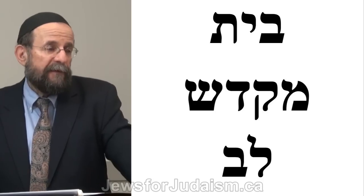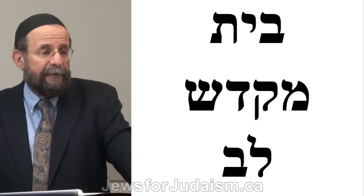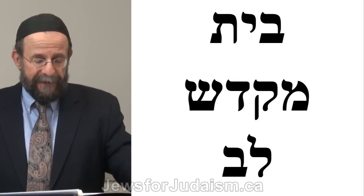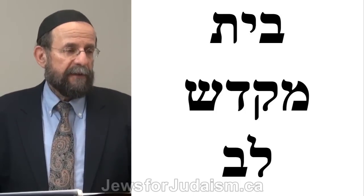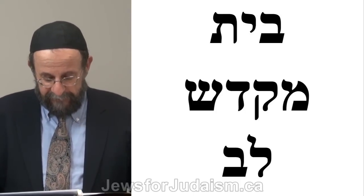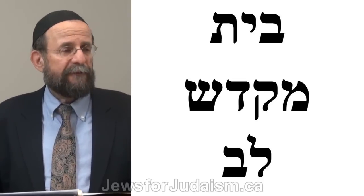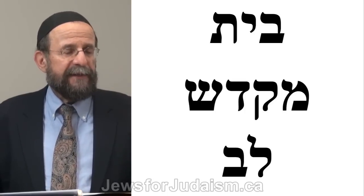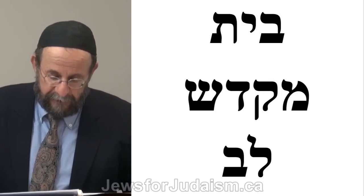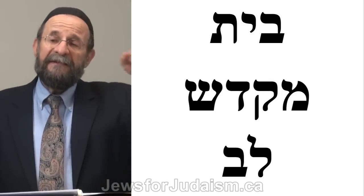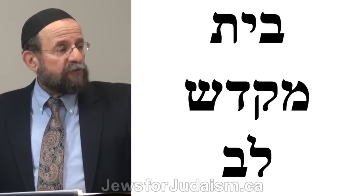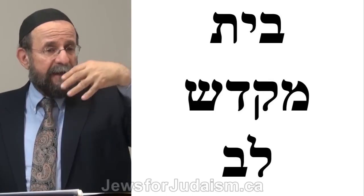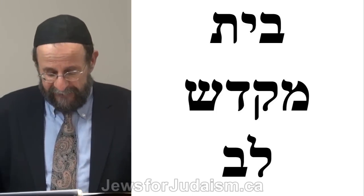Bait is the second letter — it can also be read as Bayit, a house. But we have another kind of structure: the word Mikdash, a sanctuary. In the Torah, Exodus chapter 25, God commanded the Jewish people, Asuli mikdash — make for me a sanctuary — v'shochanti b'tocham — and I will dwell among them. The Torah doesn't say 'I will dwell in it,' but 'I will dwell among them,' meaning in the hearts of all the people who associate with that sanctuary.